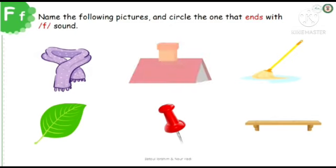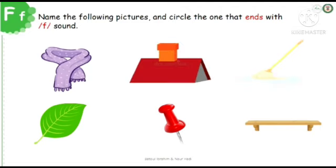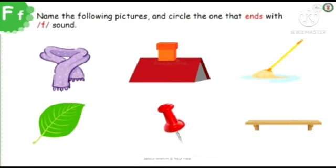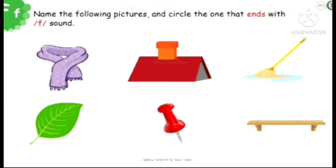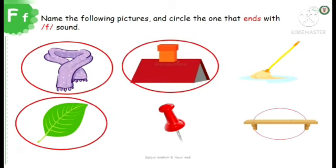Scarf, roof, map, leaf, pin, and shelf. Let's repeat. Don't forget to check your answers after circling the one that ends with the F sound. So the right answers are scarf, roof, leaf, and shelf.